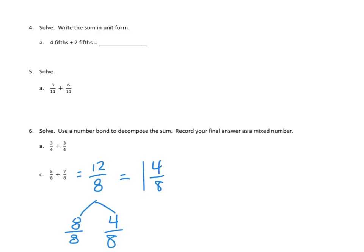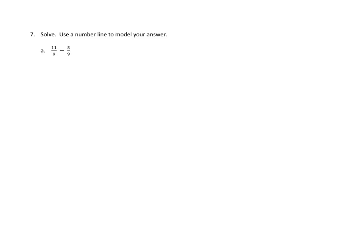Let's take a look at one more problem. Problem number seven, solve. Use a number line to model your answer. Oh, boy. Let's see. We've got a number line that we've got to draw out here. And we need to start at 11 ninths. Well, we always start a number line somewhere around 0. But in this case, I notice that the numerator is greater than the denominator.